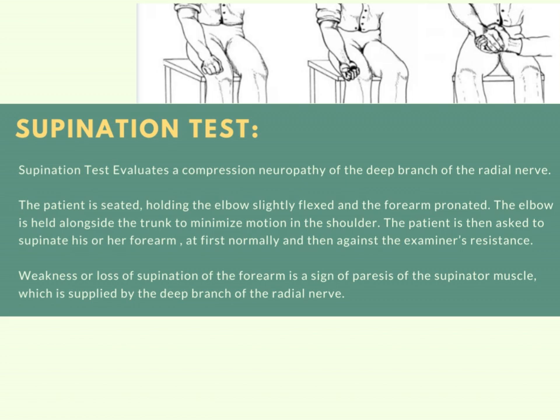If the patient can actively perform supination, the examiner can provide resistance. Weakness or loss of supination of the forearm is a sign of paresis of the supinator muscles, which is supplied by the deep branch of the radial nerve. This confirms that the radial nerve is damaged. The supination test evaluates compression neuropathy of the deep branches of the radial nerve.